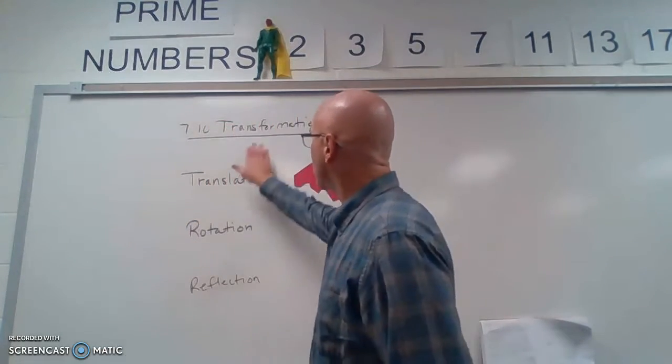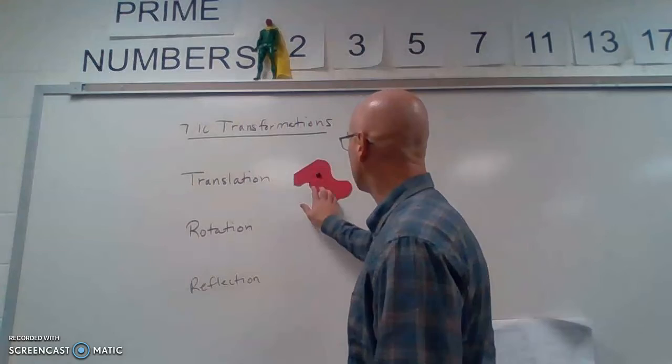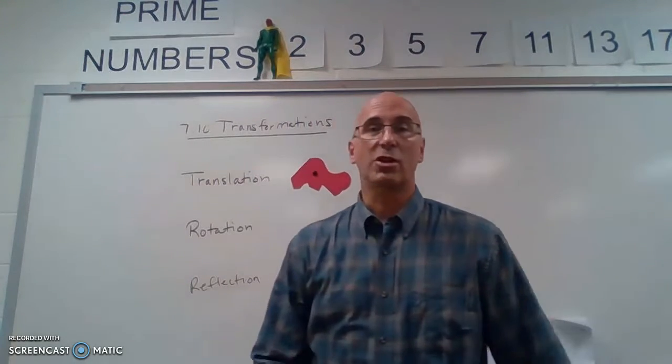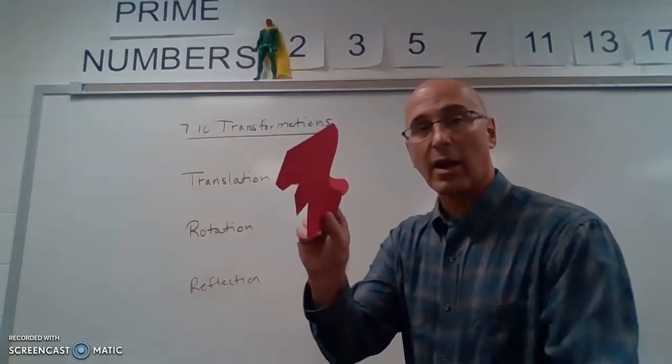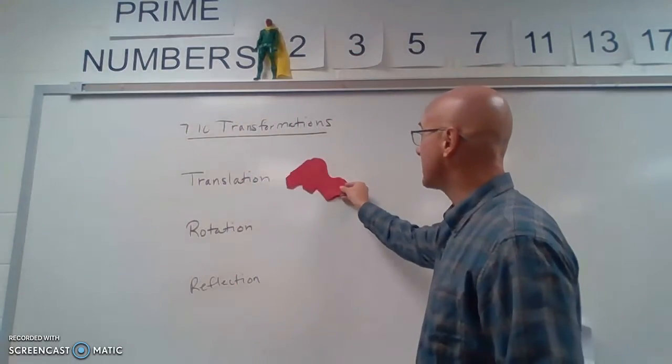And the first type of transformation is called a translation. You're going to translate it. That simply means sliding it one direction or another. So I cut out another shape exactly the same.